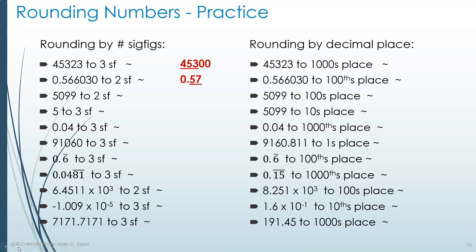5,099 to two sig figs. We look at the 5 and the 0 as the positions we're keeping. The 9 that follows the 0 is used to determine what to do with the 0. Since 9 is a high number, the 0 will be rounded up to 1, so the first two digits become 5, 1. The remaining places are filled with placeholder zeros, giving 5,100. This confirms the number is close to the original — 5,100 is very close to 5,099 — and it only has two sig figs.